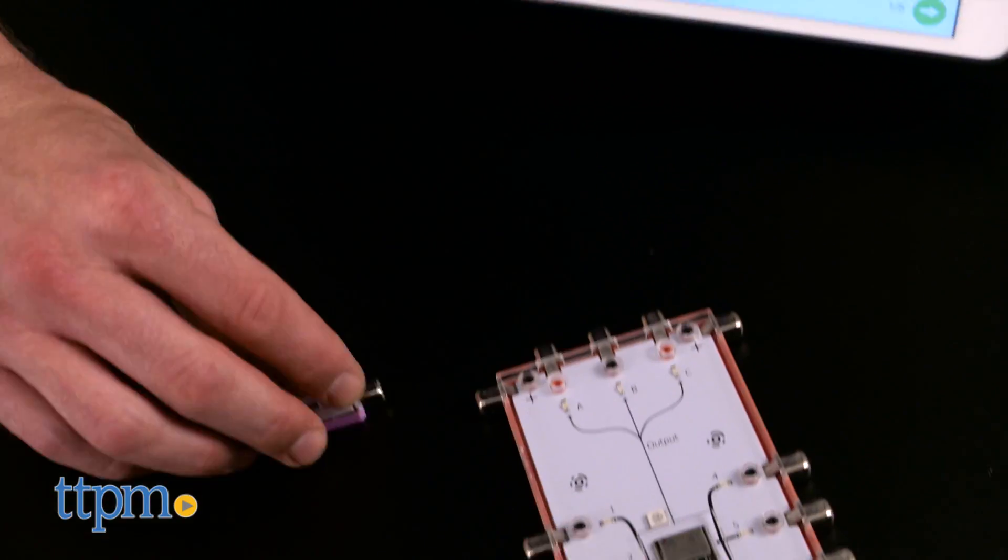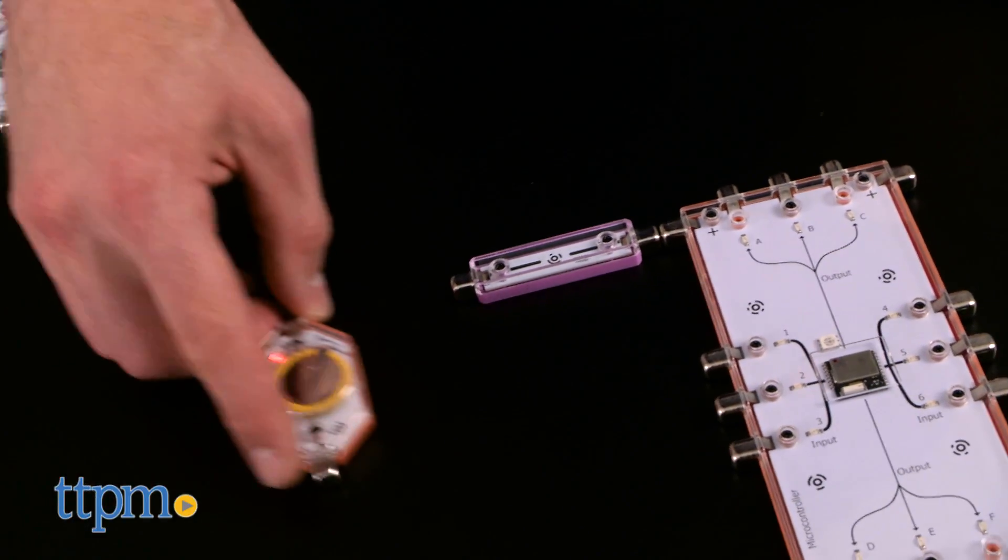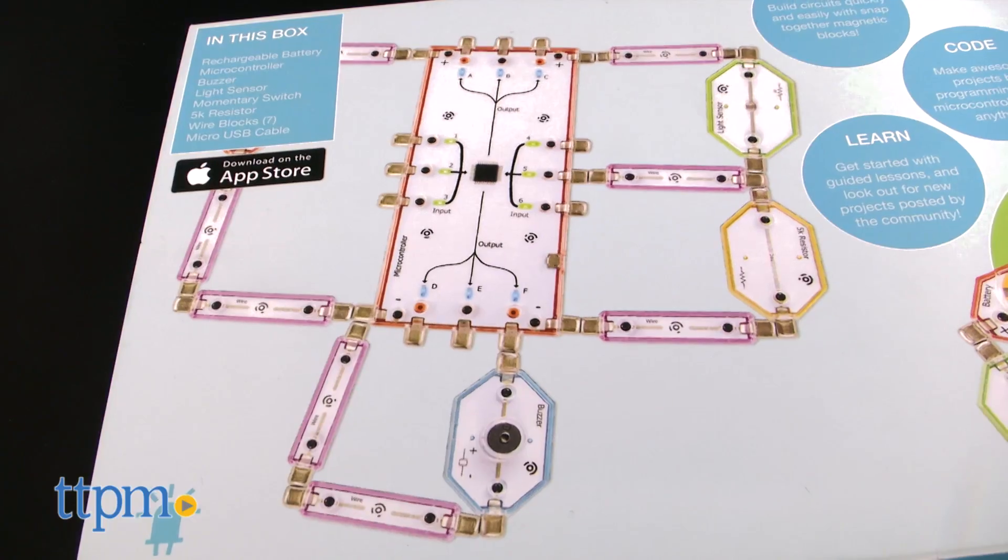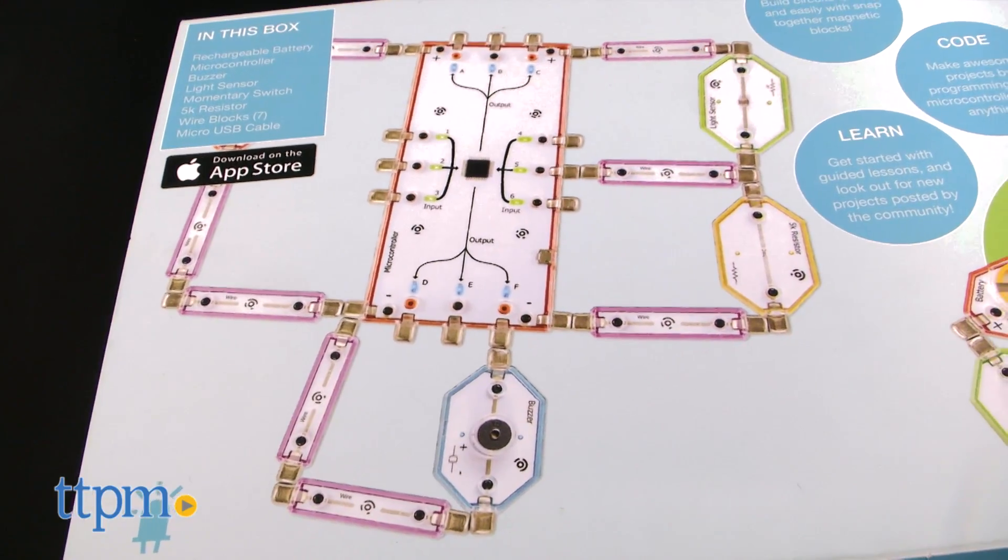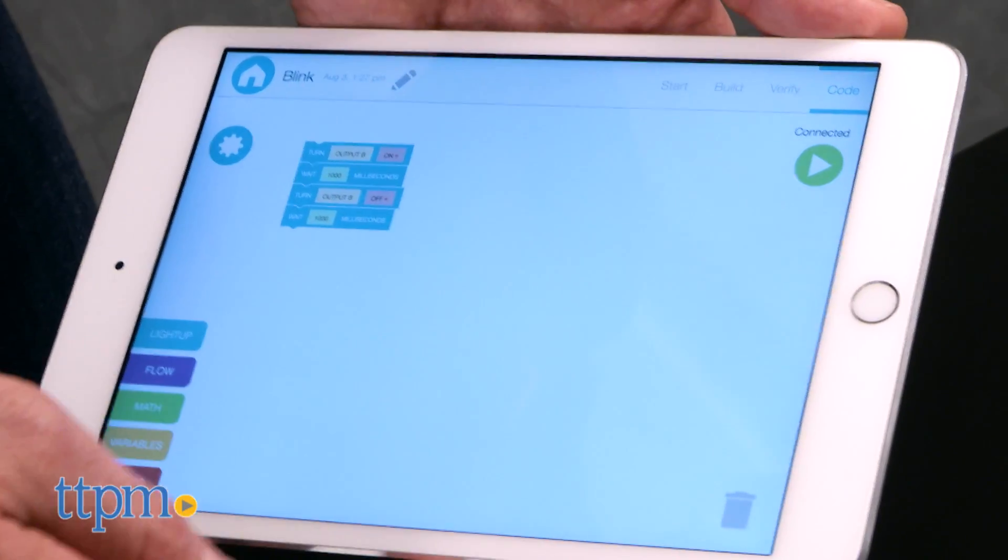I wasn't able to really get into the programming, but I may see if Santa can leave one under the tree. Now one thing to note, at least one of the included machines, the one pictured on the box in fact, called for eight wire components, but the kit only includes seven. I don't see that other pieces are available for individual purchase, so that confused me a bit.